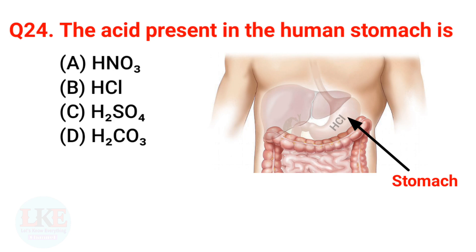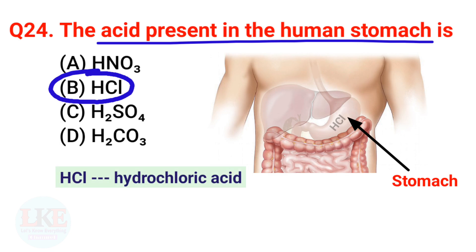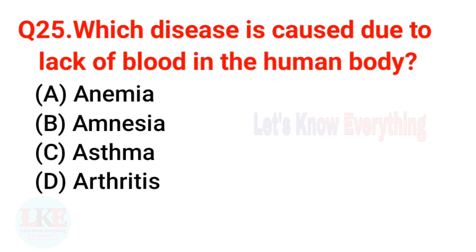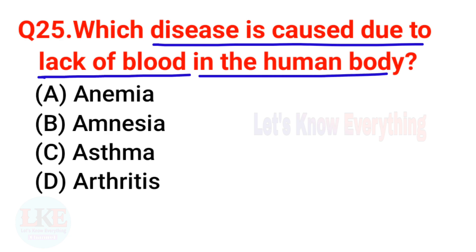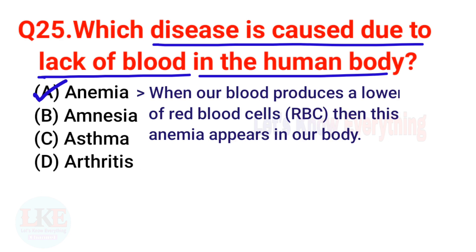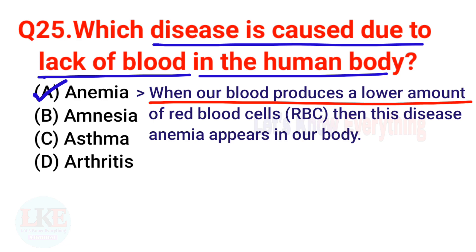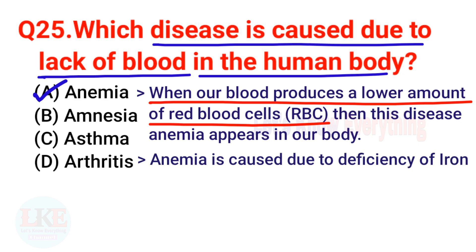Question 24: The acid present in the human stomach is HCl — hydrochloric acid. Question 25: Which disease is caused due to lack of blood in the human body? Options: A) Anemia, B) Amnesia, C) Asthma, D) Arthritis. The right answer is option A — anemia. Anemia is caused due to lack of blood; when the body produces a lower amount of red blood cells (RBC), anemia appears. Anemia is caused due to deficiency of iron.